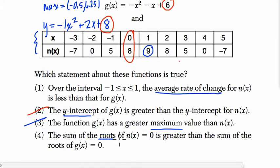Now, how do we compare the roots of these two equations? Well, they give us the roots for n of x. Those are these points right here when the height is 0. And the sum of the roots for n of x is 4 plus negative 2. 4 plus negative 2. That's 2.